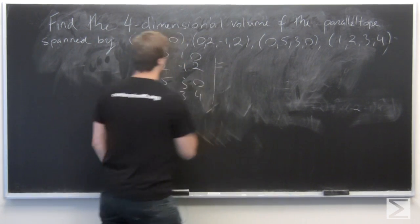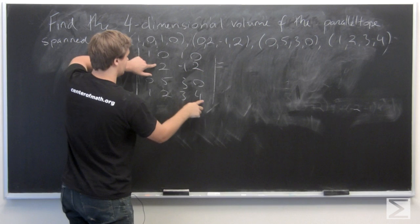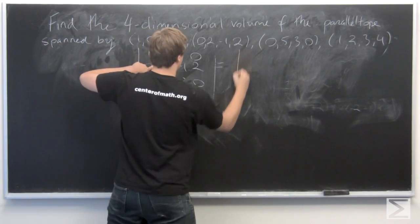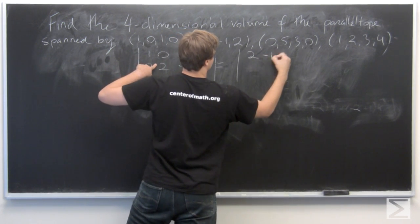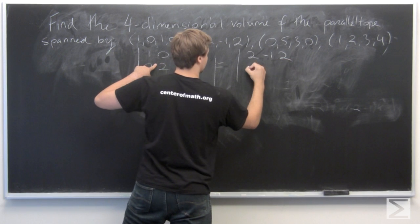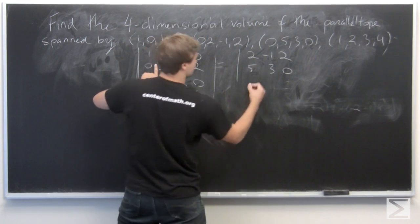We're going to expand along this top row. So we're going to have 1 times the determinant of this 3 by 3 matrix: the determinant of 2, -1, 2; 5, 3, 0; 2, 3, 4.